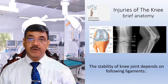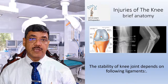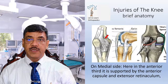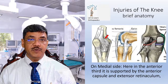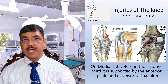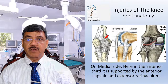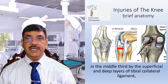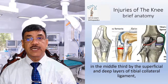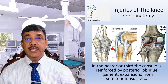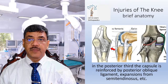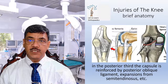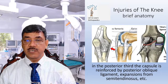The stability of the knee joint depends on the following ligaments. On the medial side, in the anterior third, it is supported by the anterior capsule and the extension retinaculum. In the middle third, by the superficial and deep layers of the tibial collateral ligament. In the posterior third, the capsule is reinforced by the posterior oblique ligament and expansions from the semitendinosus, etc.